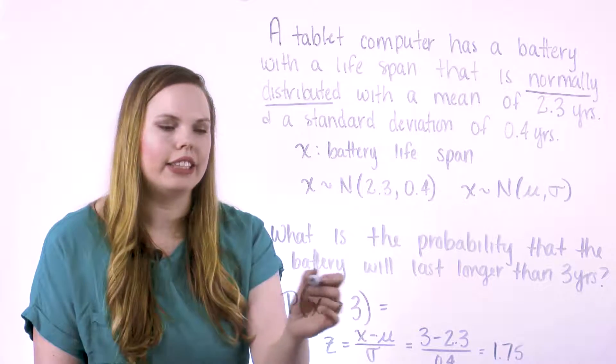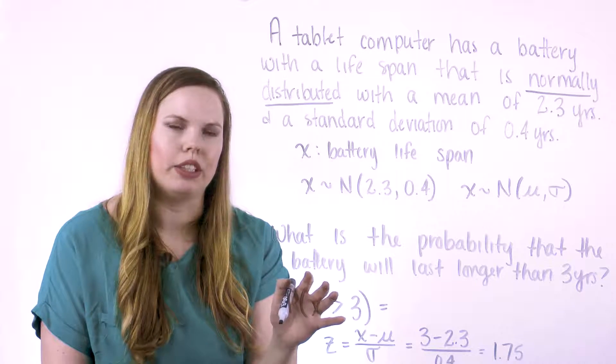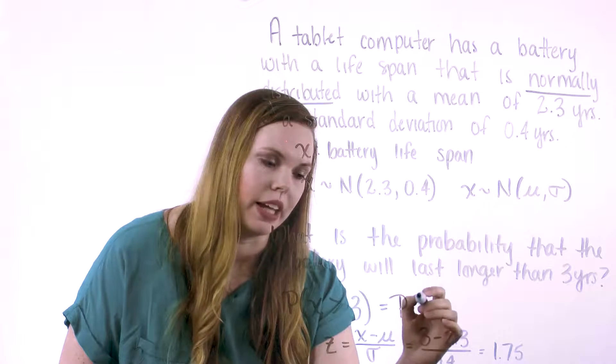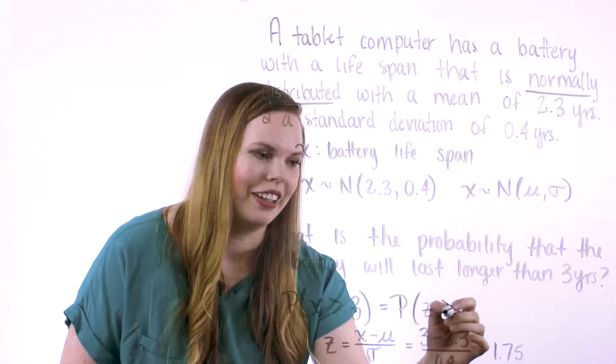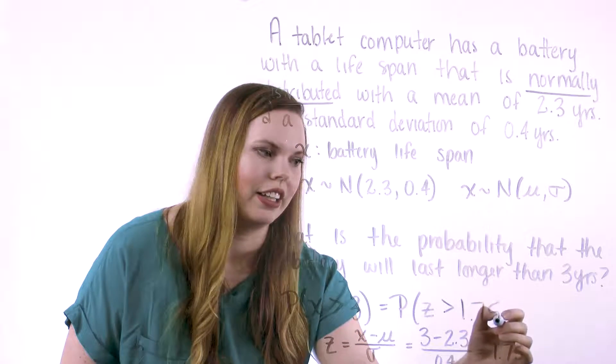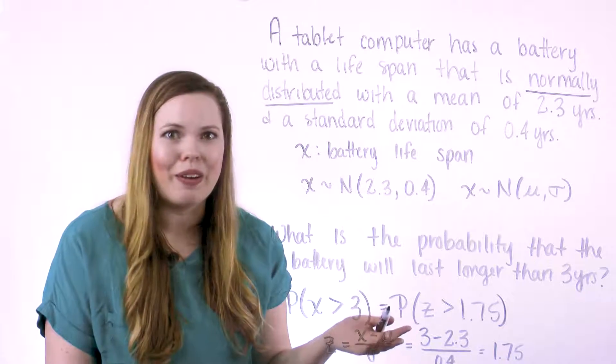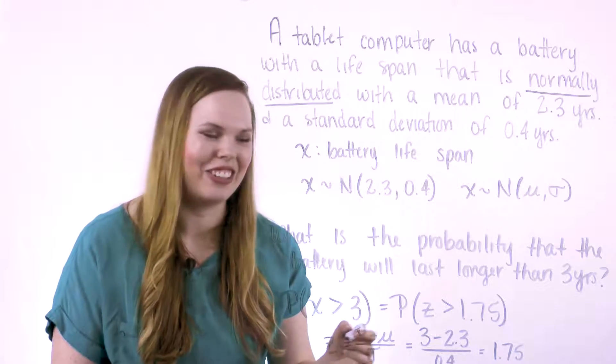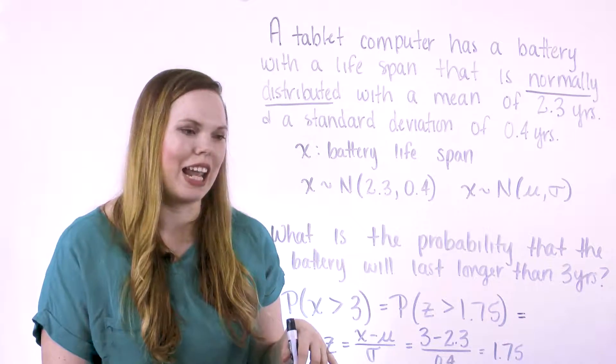So really when we're asking the probability that x is greater than 3, and we know this is normally distributed, what we're really asking, or what we're asking is the same thing as the probability that z is greater than 1.75, standardizing that problem. And now we're in a z-score problem, which we know how to do. And if you don't, you can look at a previous video about standard normal distribution.